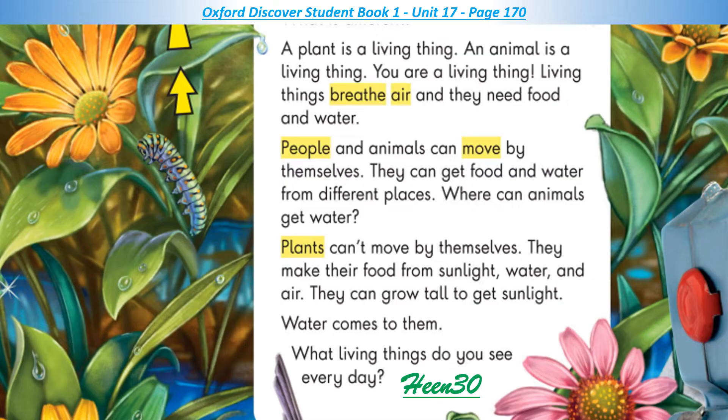People and animals can move by themselves. They can get food and water from different places. Where can animals get water? Plants can't move by themselves. They make their food from sunlight, water and air. They can grow tall to get sunlight, and water comes to them.